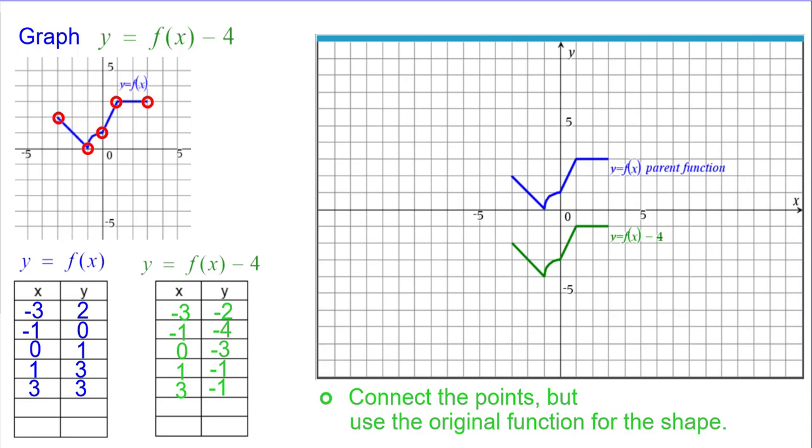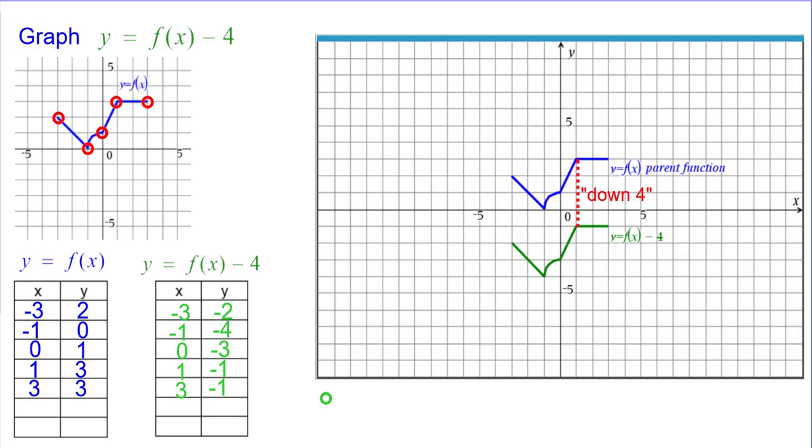And we can compare that to the parent function, y equals f of x in blue, and see that corresponding points from the blue to the green are down 4. Not just these couple, but all points are down 4.